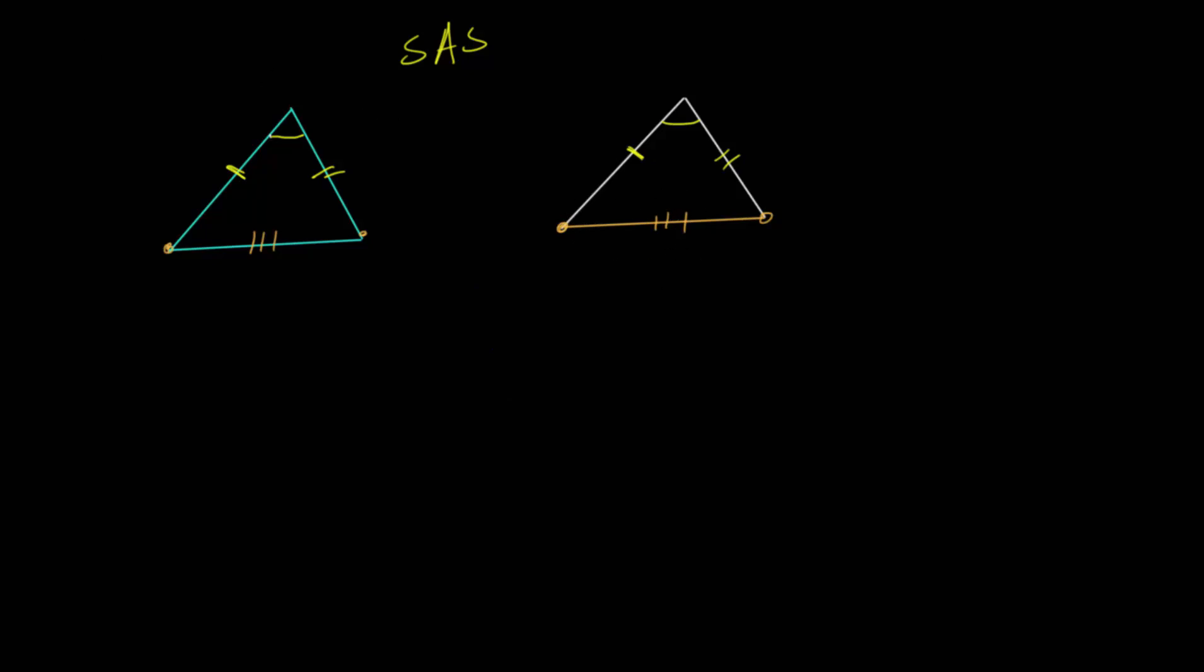You can imagine this third side length here as being whatever length you want, but in order for these triangles to close, it has to be a very specific length. So hopefully it's clear that if you have this side-angle-side relationship between two different triangles, that they must be congruent. They must be the same size and the same shape.